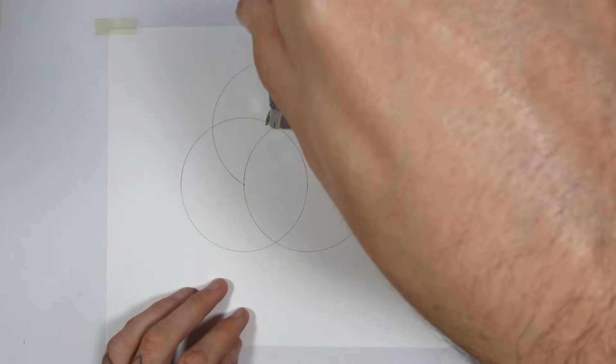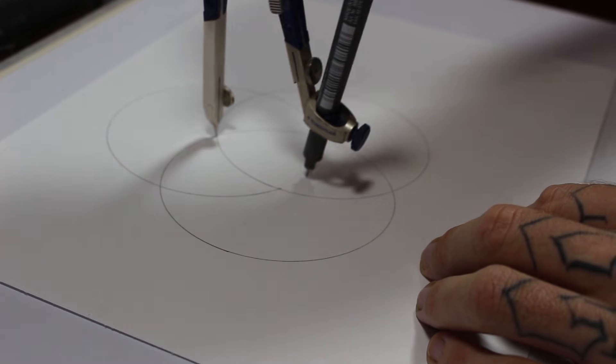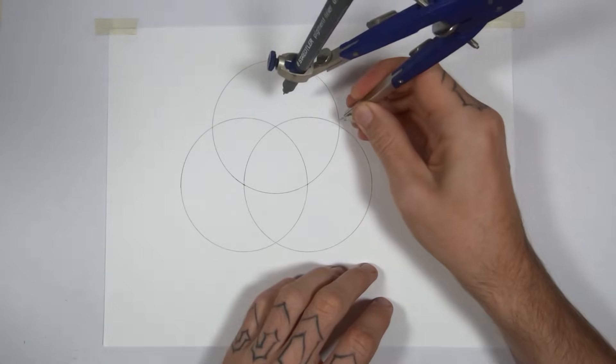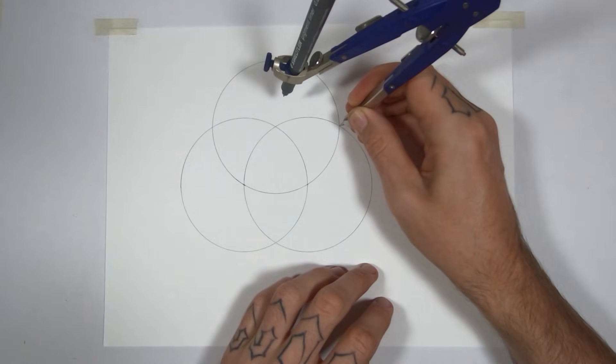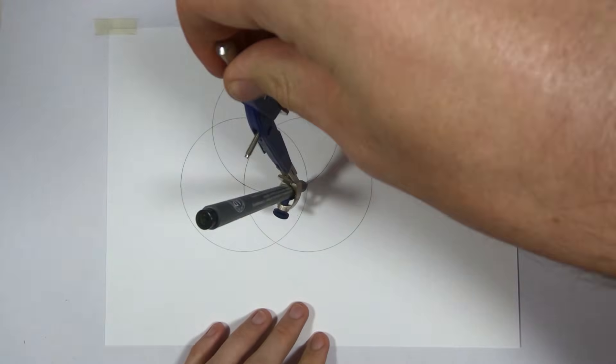The seed of life is a symbol made up of seven circles and it divides the center circle into six. It's just a very important piece of sacred geometry. Everything comes from it pretty much.